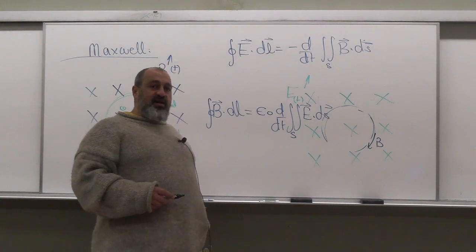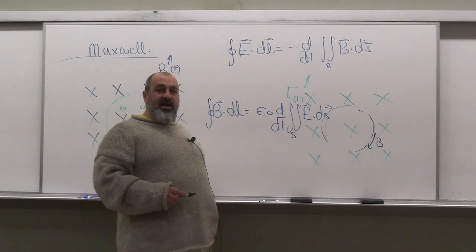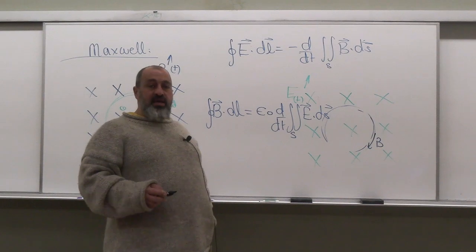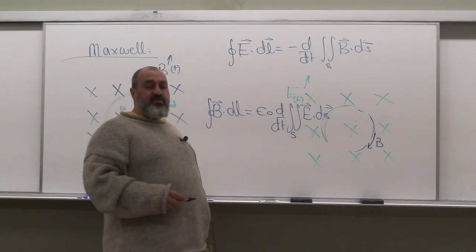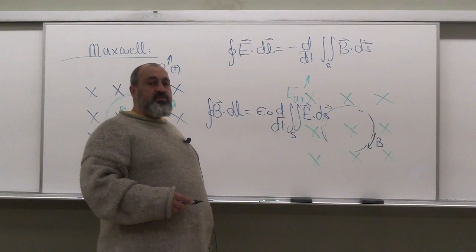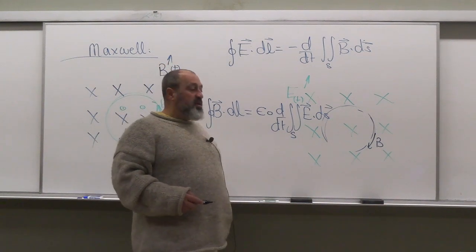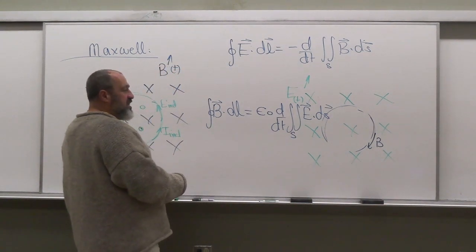The other one that we haven't talked about is Gauss's law for magnetism. Please look that up: integral of B dot dS is equal to zero.